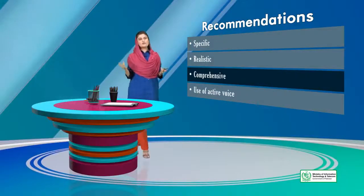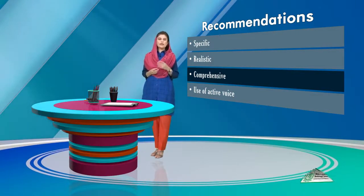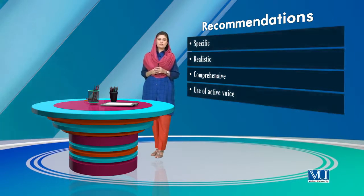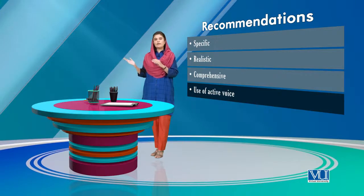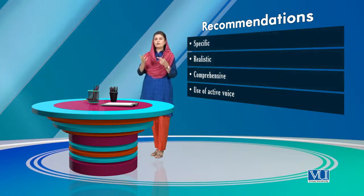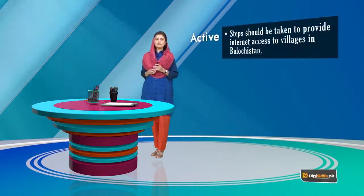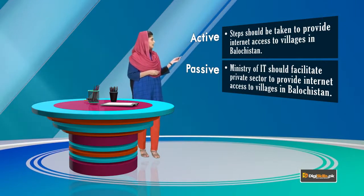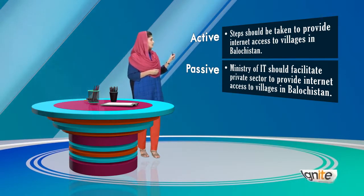All areas covered in the reported activity should have some recommendation under them. That will make it more interesting to a wider variety of audience. Recommendations should be written in active voice — do not write 'it should be done'; write 'such and such department should do it,' so it is clear who has to do it and what has to be done. For example: 'Steps should be taken to provide internet access to villages in Balochistan' is not a good way to write. A better way: 'Ministry of IT should facilitate the private sector to provide internet access to villages in Balochistan.' This names both the ministry and the private sector's roles clearly.